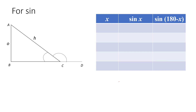Let's do some investigation. I have this angle here — let's call this angle x. This is a right angle triangle, and the angle down here is of course 180 minus x. When we talk about sine x, what we actually mean is the ratio of the opposite side AB over the hypotenuse AC.